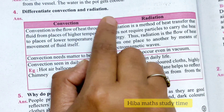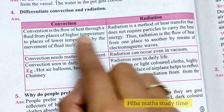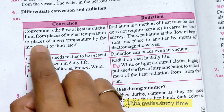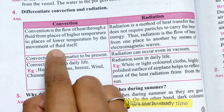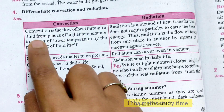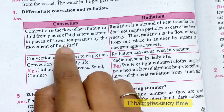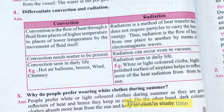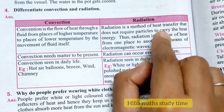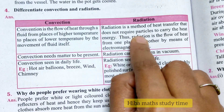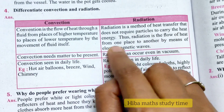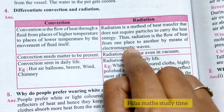Differentiate convection and radiation. Convection is the flow of heat through a fluid from a place of higher temperature to a place of lower temperature by the movement of the fluid itself. Radiation is a method of heat transfer that does not require particles to carry the heat energy. Thus, radiation is the flow of heat from one place to another by means of electromagnetic waves.